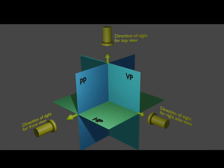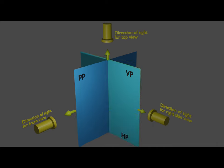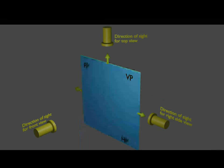Let's see with an animation the case where we consider the right side view. Now you can see that again the vertical plane, horizontal plane, and the profile plane overlap each other, and we get the different views on a two-dimensional sheet.